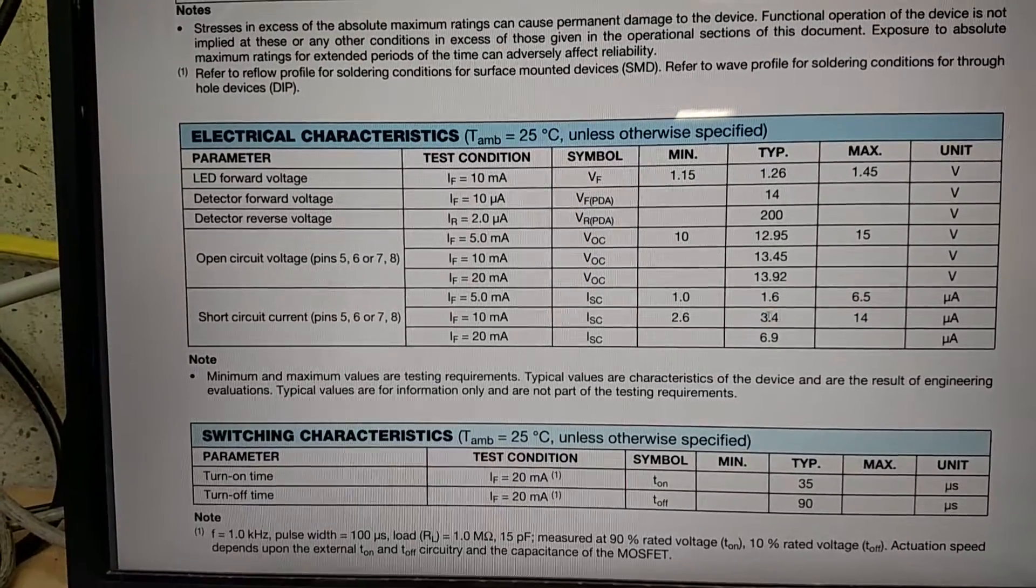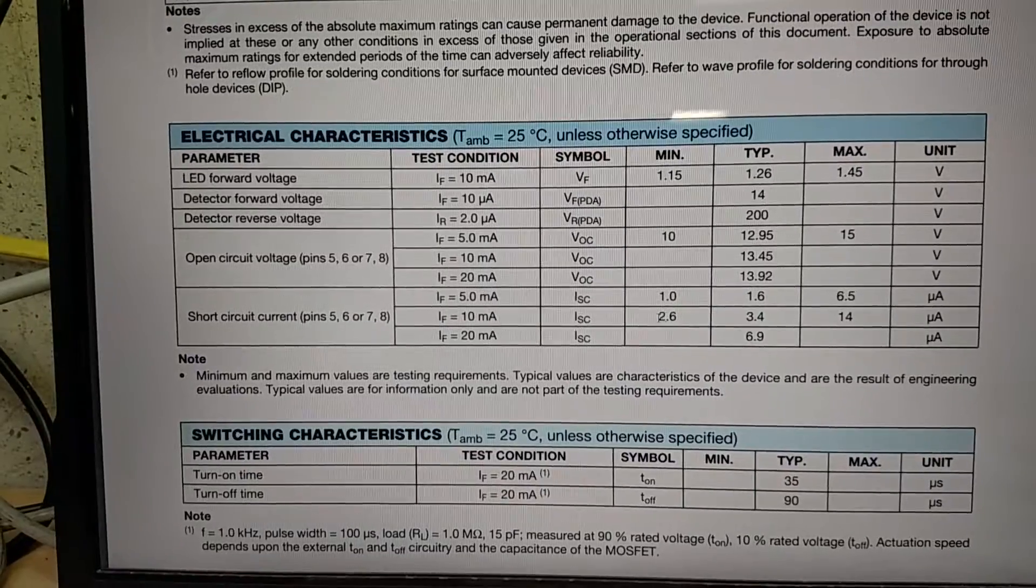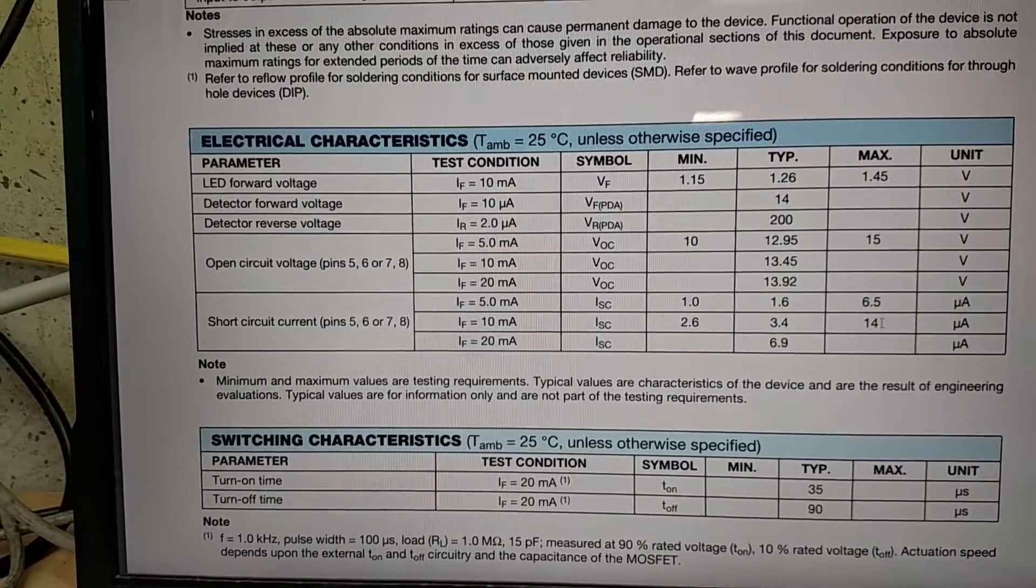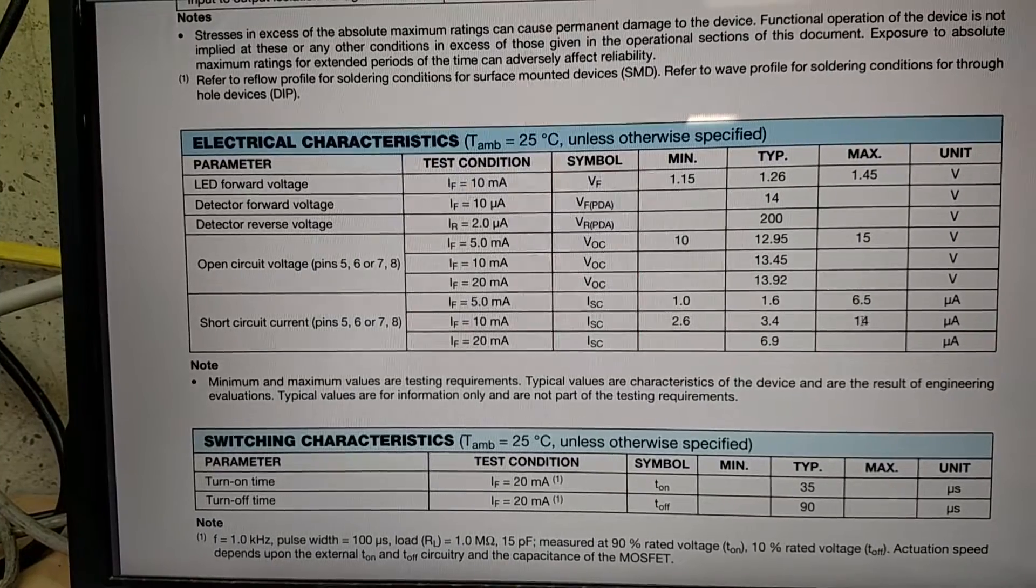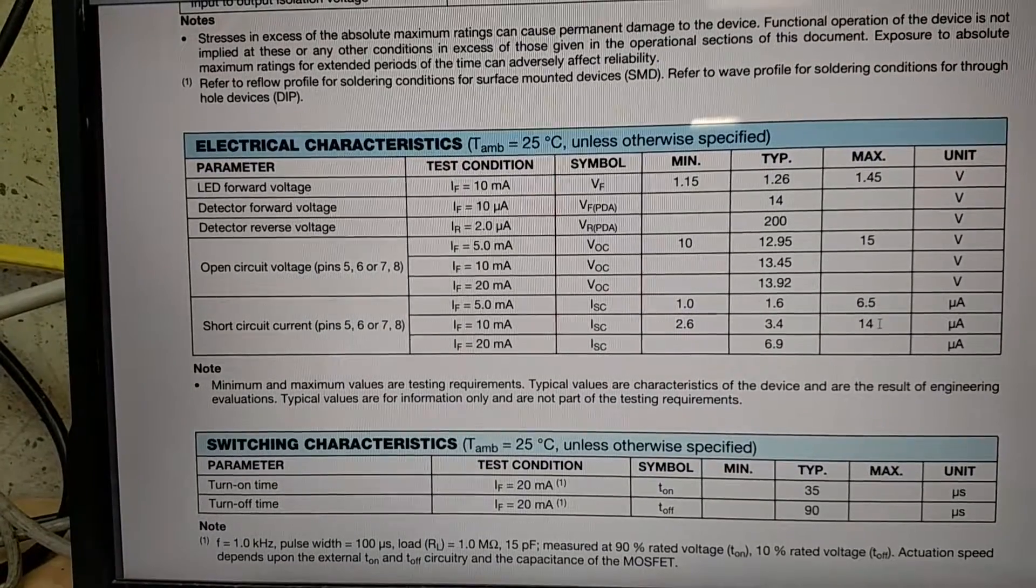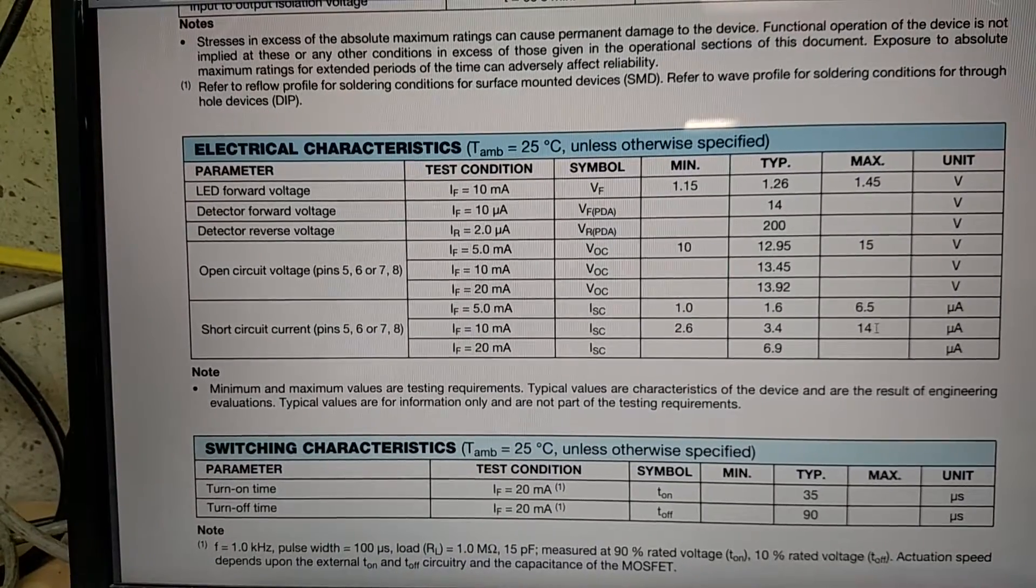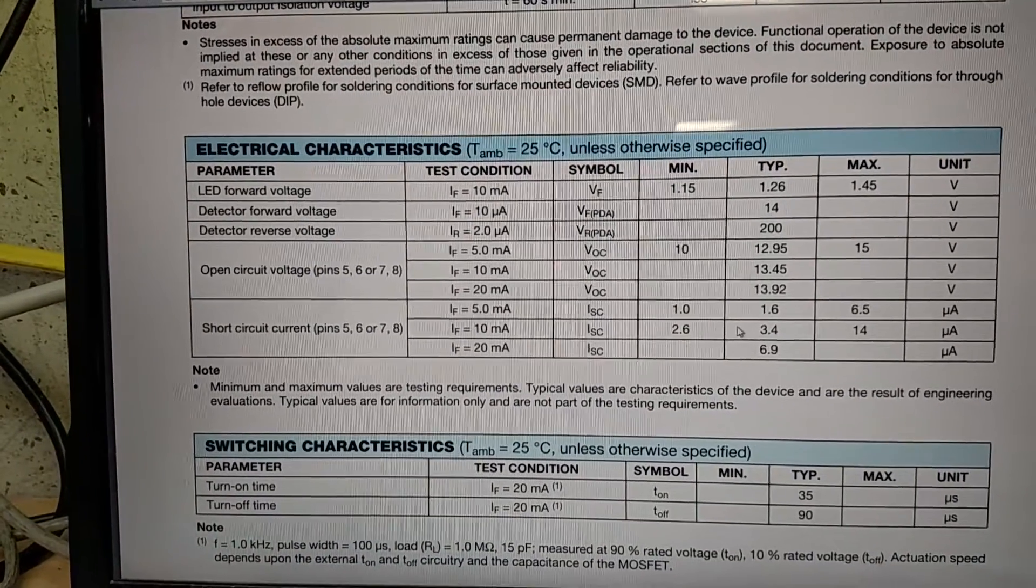So typical. Worst case we'll be getting about 5.1 volts and then best case, well we won't get that high. I guess technically we could get to 28 volts but the gate's good to 30 so we should be fine.